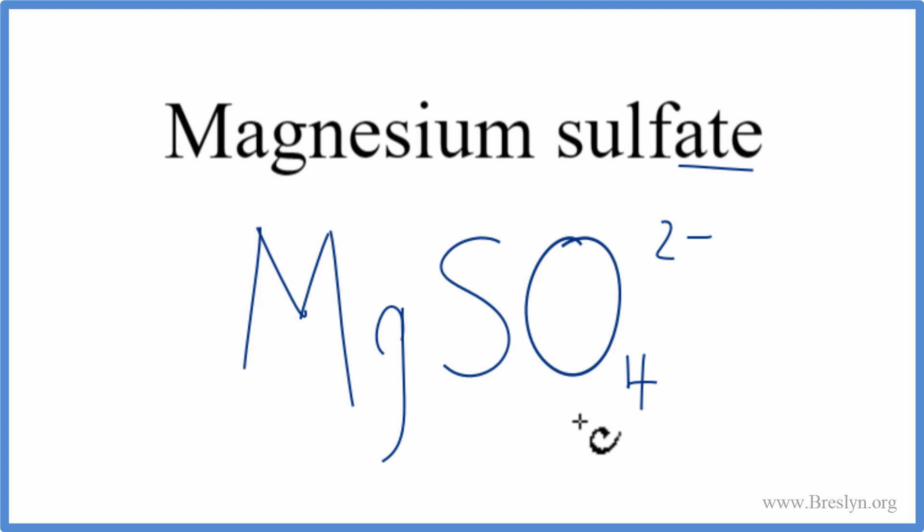Magnesium is a metal, and sulfate is made up of nonmetals. Metal plus nonmetals forms an ionic compound, and we need to make sure the charges all add up to zero, giving a net charge of zero.